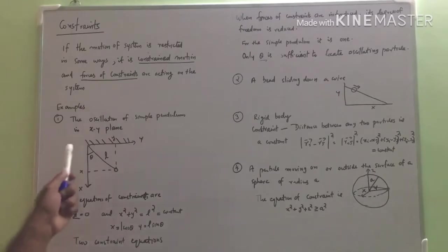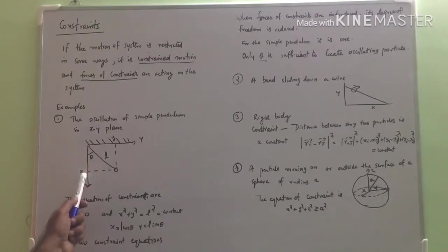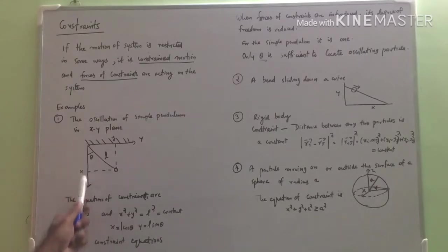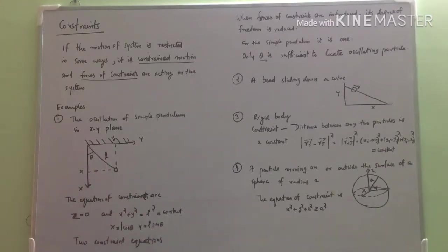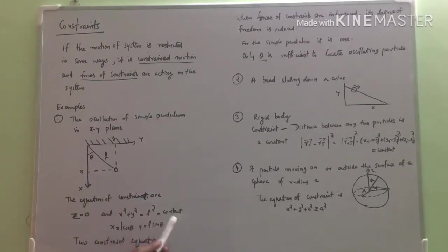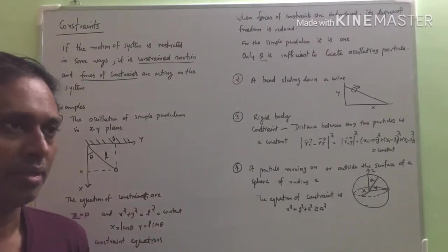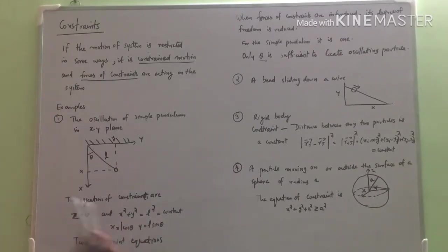Another constraint is that the length of the pendulum is a constant. If you take x, the angle made by the simple pendulum at the vertical is theta. So x is l cos theta and y is l sin theta. If you square and add x and y, x squared plus y squared equals a constant. So two constraints are acting on the system, and these are the constraint equations.